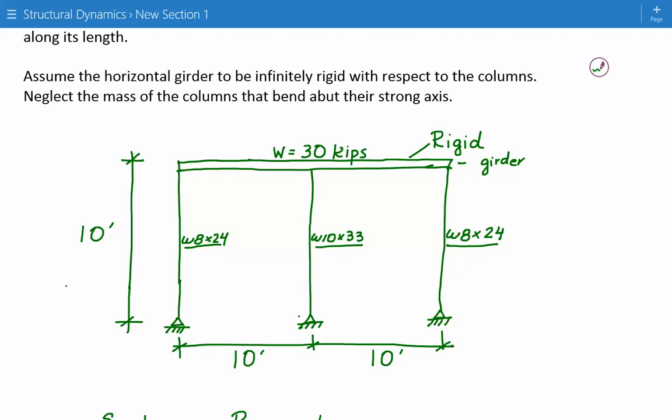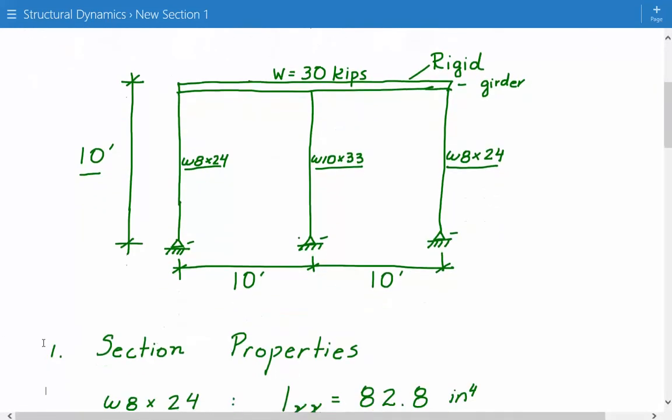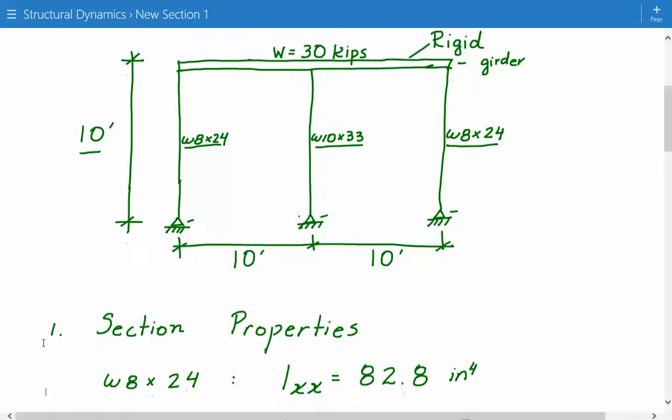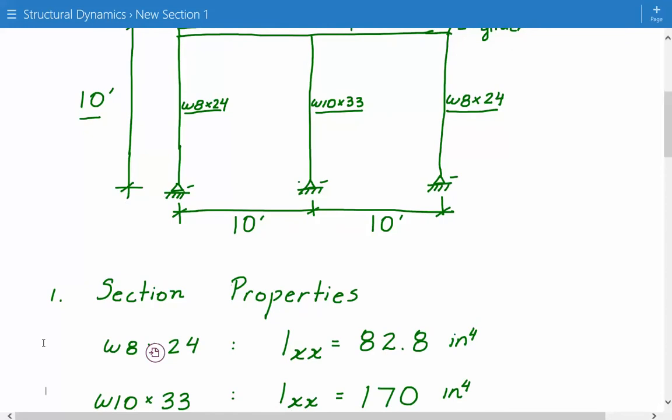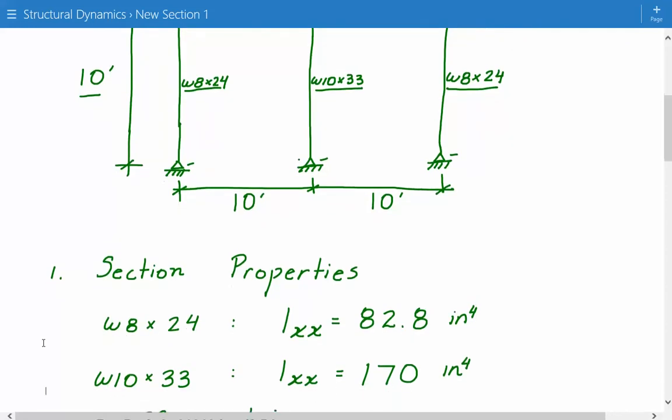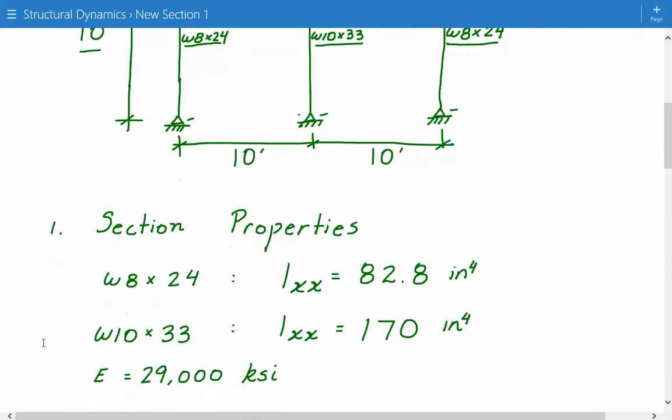And the length of these columns is 10 feet. And they're pinned at their supports over here. It's pinned at all three locations. So the first thing we need to do is get the section properties for the W8 by 24 and W10 by 33. And the section property that we need is the second moment of inertia. So you can get that from the steel manual.